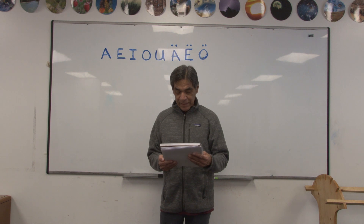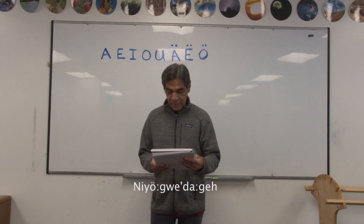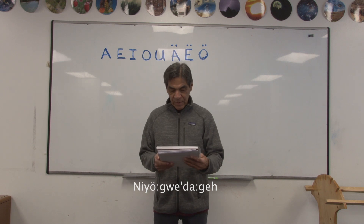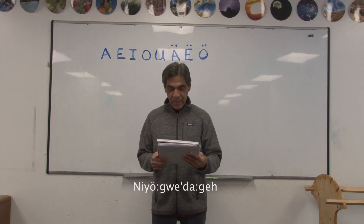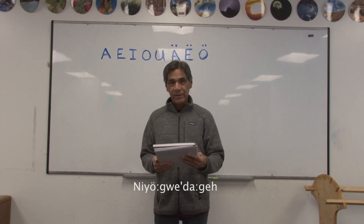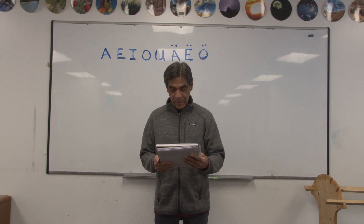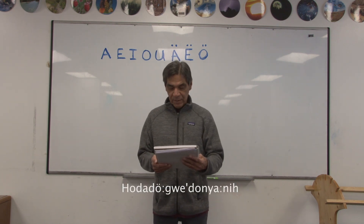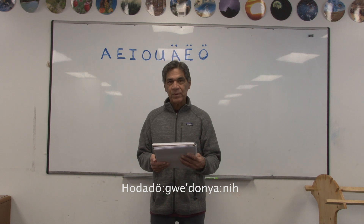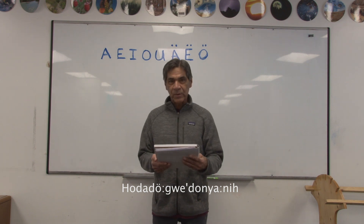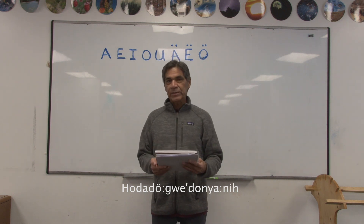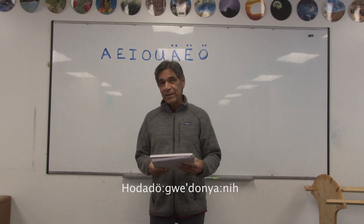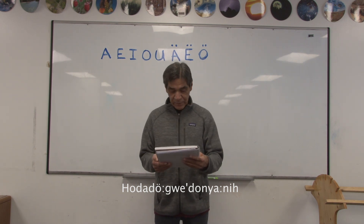Another word we went over was the number of people — remember that is like a quantifier — the number of the people, the creator made for himself. You can use these when you're acknowledging each other in the beginning of Kenonia.